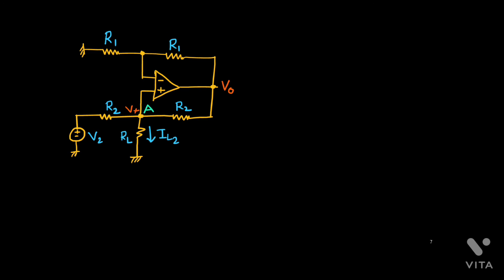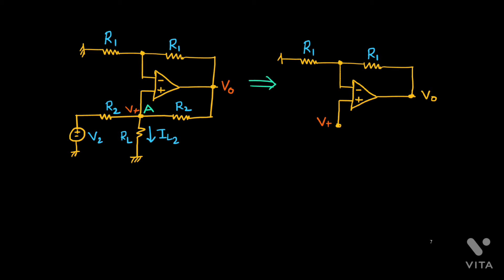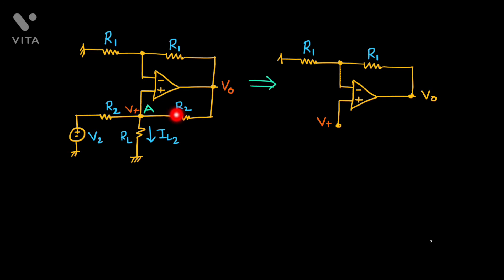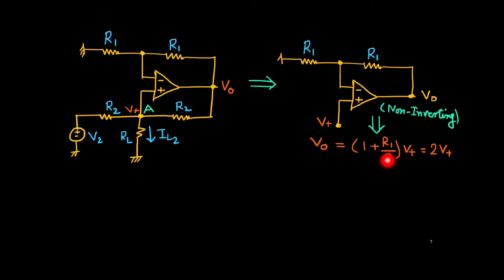First, I consider the case where source V2 is connected. Here the potential is V0 and this is V+. If this potential is V+, then the circuit looks like a non-inverting amplifier where V+ is the input. The non-inverting gain is 1 plus R1/R1, so V0 equals 2 times V+.